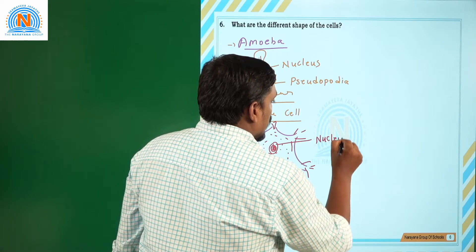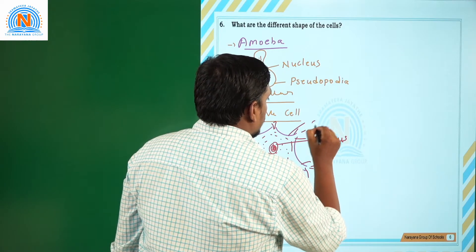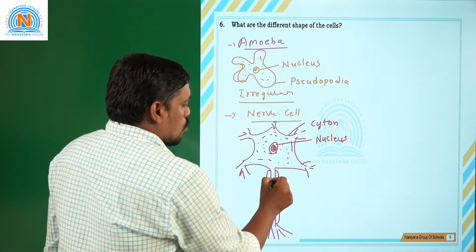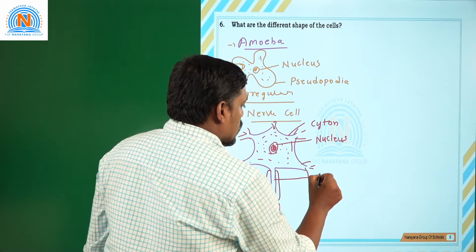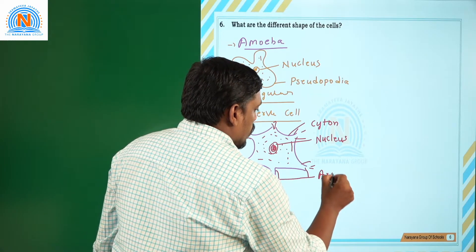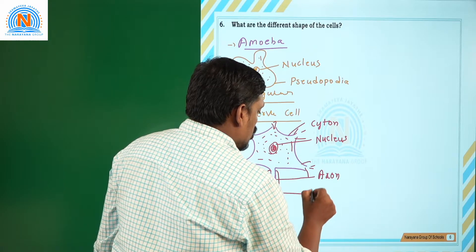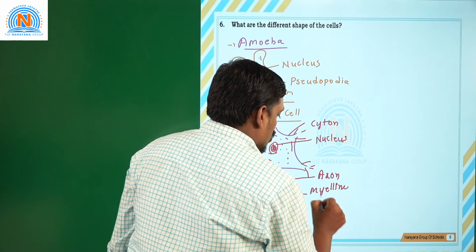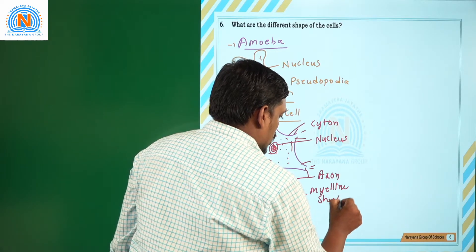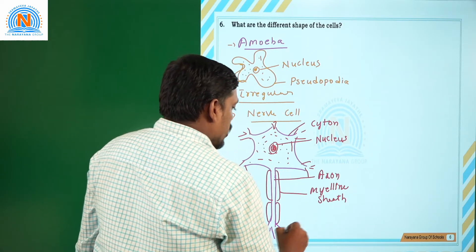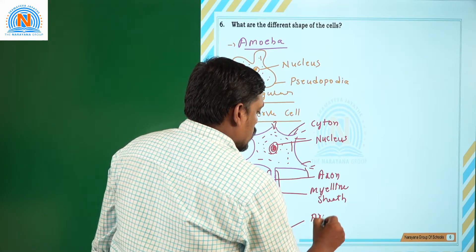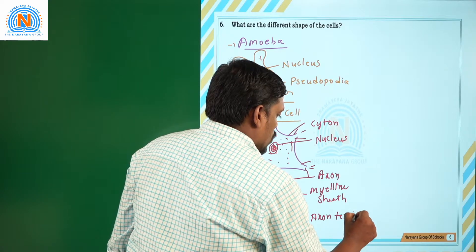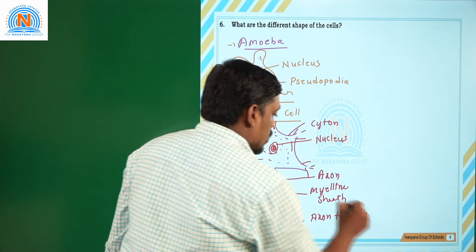A nucleus is seen in a special structure called the cell body, cytone, or soma. The cytone or soma is connected to a pole-like structure called the axon, which is covered by a sheet called the myelin sheet. The axon divides into smaller branches called axon terminals. These are the various parts seen in a nerve cell.